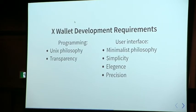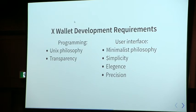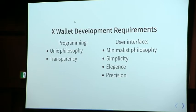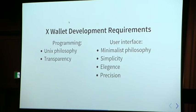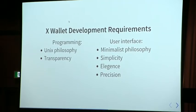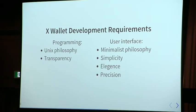When we started development, I split the requirements into two categories: programming and user interface. On the programming side, we take the Unix philosophy — we build things in a modular way, write clean code that's easy to read, easy to maintain, and much easier to find bugs in. We also take a transparent approach: we're MIT-licensed open source from the very beginning. We build on the backs of others who have open-sourced their work, and we want to make sure others can build off ours. That's how we all move forward together, and it's also important for establishing trust.